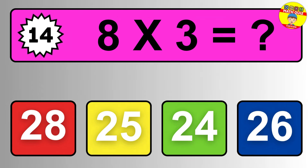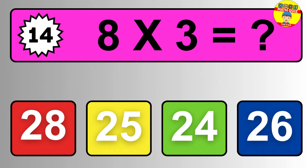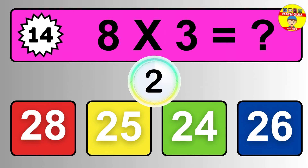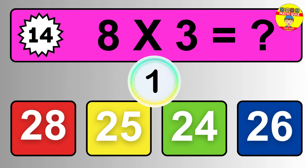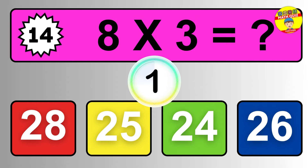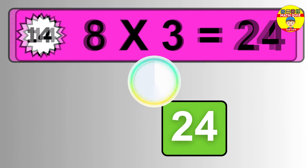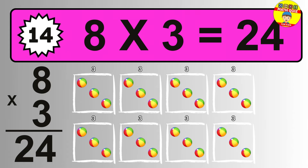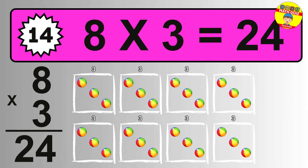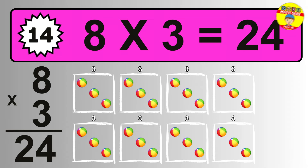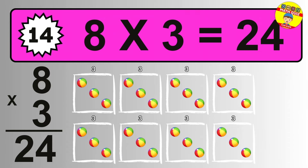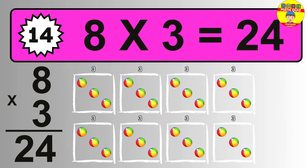Question fourteen. Eight times three equals what? The answer is eight times three is 24. To calculate, we have eight groups with three balls each one. So how many balls do we have? 24 balls.